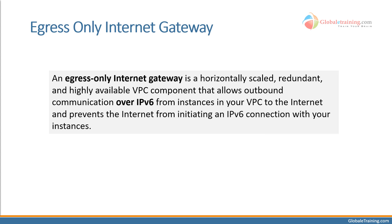An egress-only internet gateway is used for IPv6 instances. It is a horizontally scaled, redundant, and highly available VPC component that allows outbound communication over IPv6 from instances in your VPC to the internet, and prevents the internet from initiating an IPv6 connection with your instances.